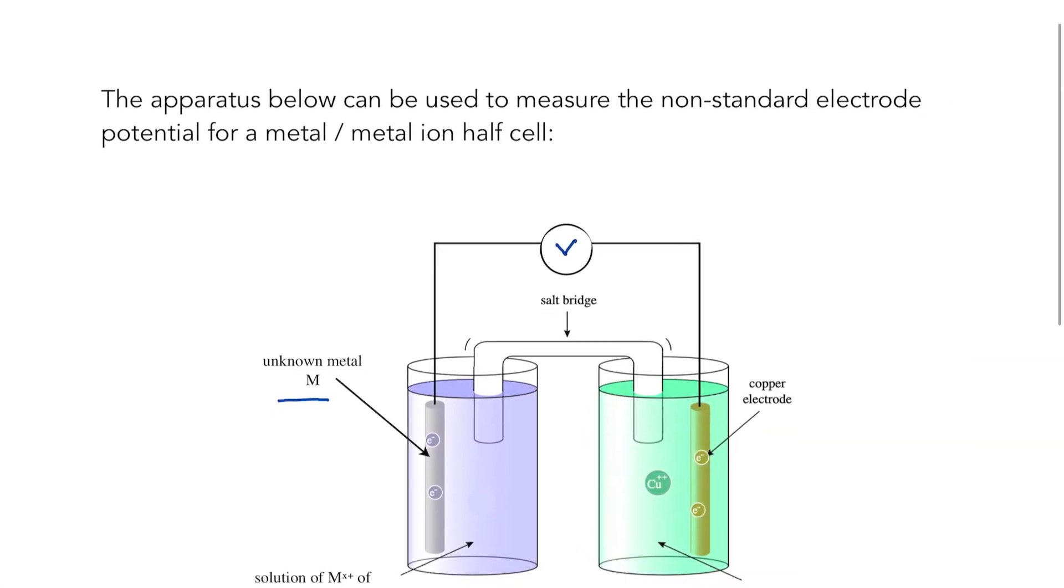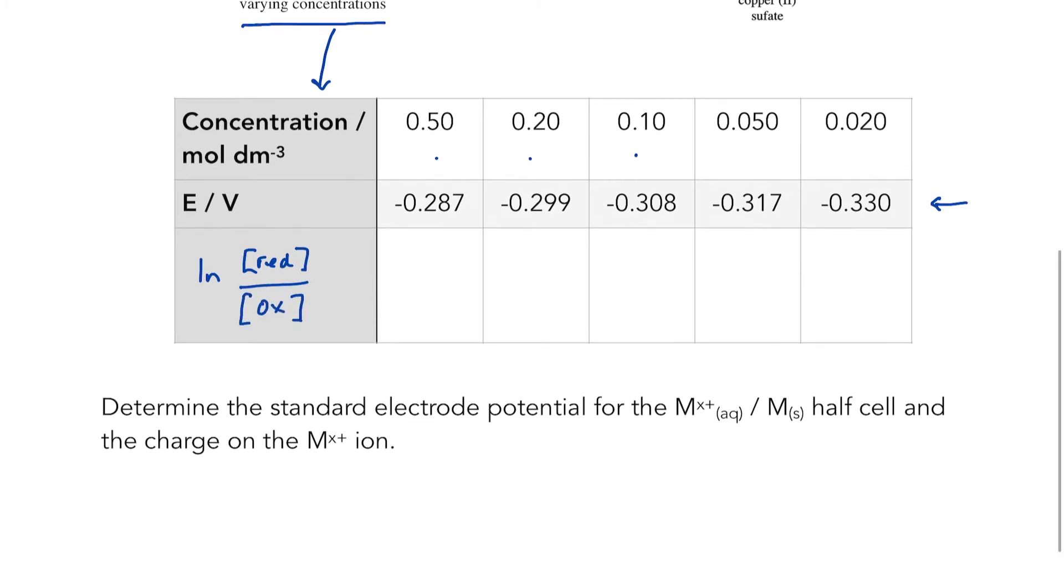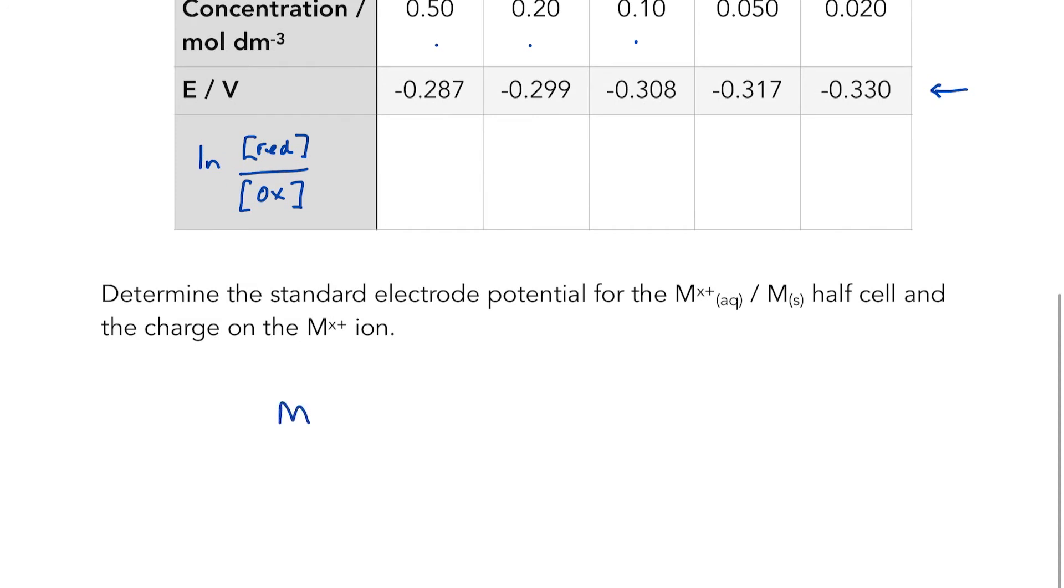The concentration. What I need in order to plot my graph is the ln of the concentration of the reduced species over the oxidized species. Well, if we were to write the equation for this half cell, it would be: